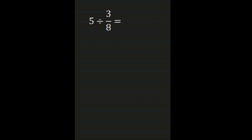For our third example, we have five divided by three-eighths — a whole number divided by a fraction. We're going to start with the whole number; we have to make it into a fraction by putting the five over one. Then with our division steps, this first number, five over one, stays exactly as it is. Then we look at the division sign — we are changing that division sign to a multiplication sign. And we are multiplying by the reciprocal of that second fraction.